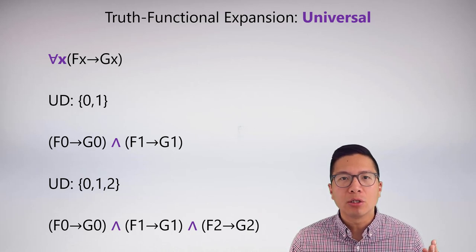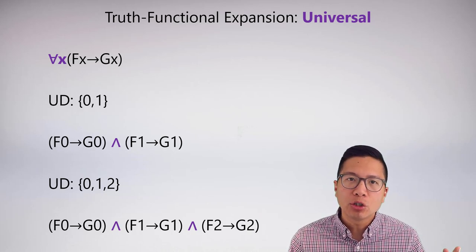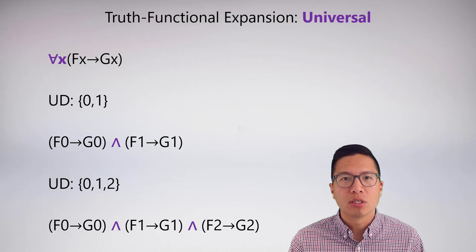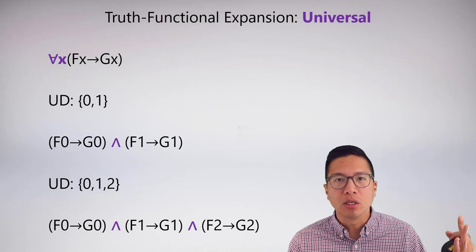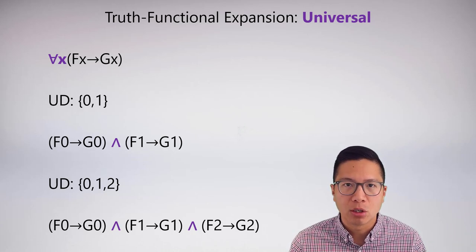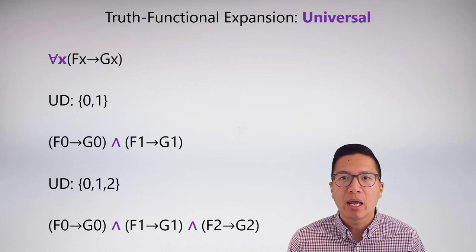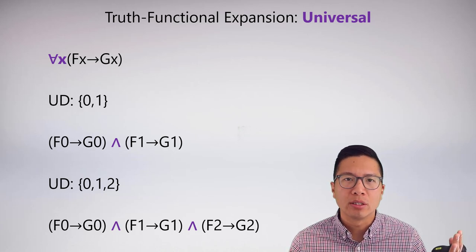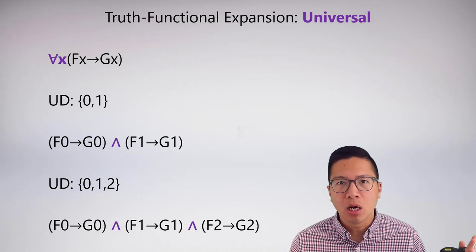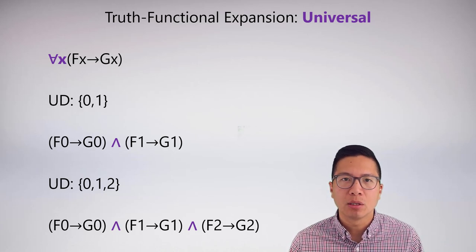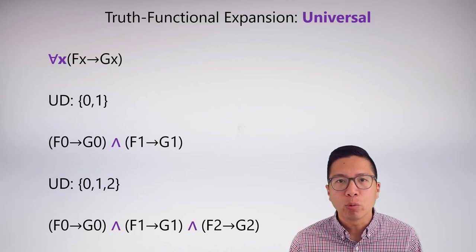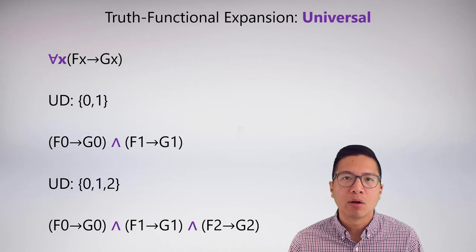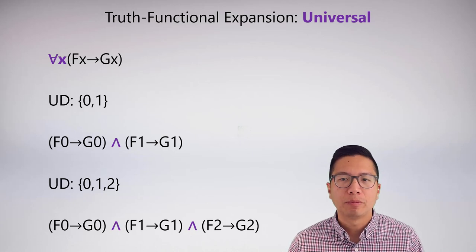You'd immediately see an issue with truth functional expansion: you can't really do this for an infinite universe. Even doing it for a universe larger than, say, 3 objects is going to be large and unwieldy. But we're not going to worry about that for now.